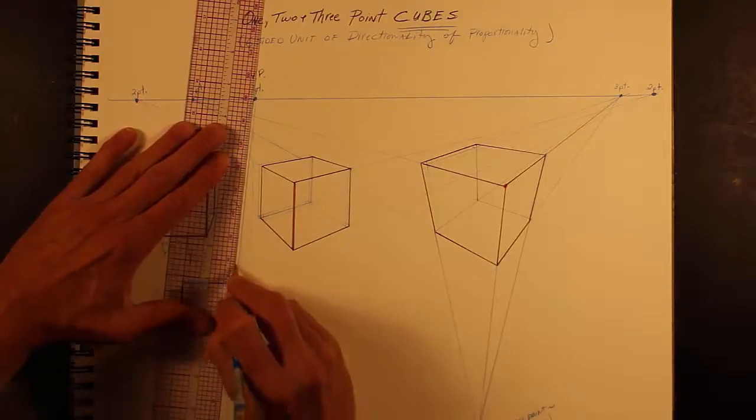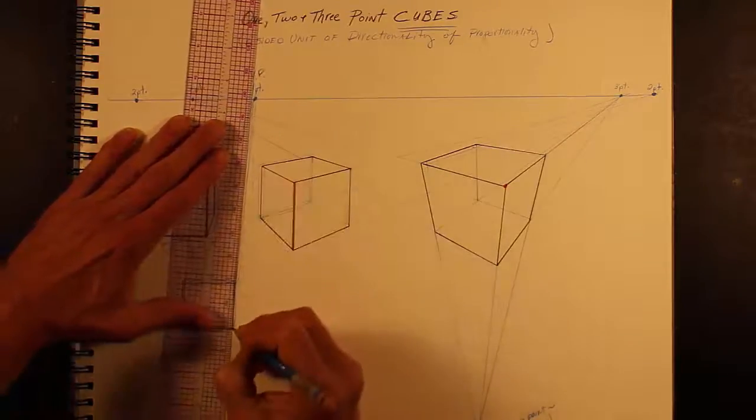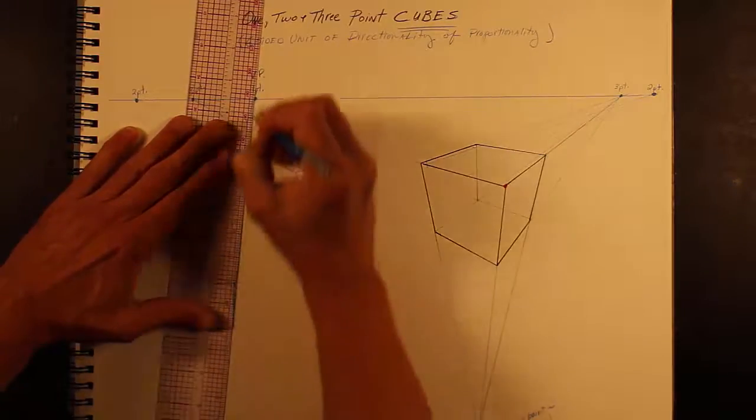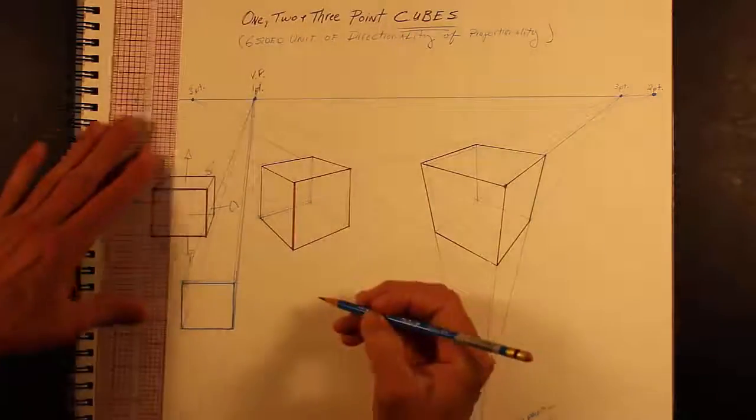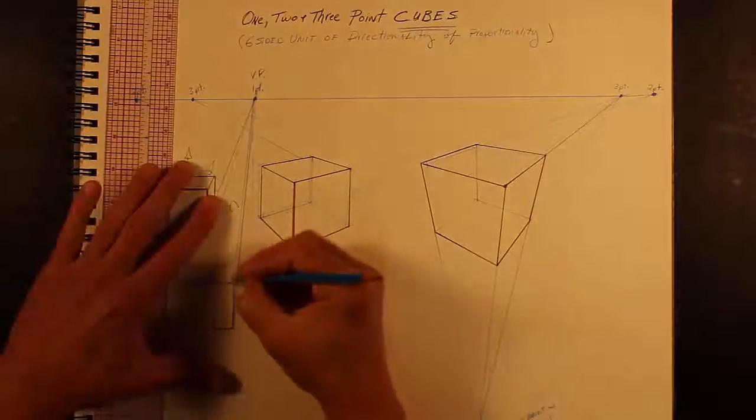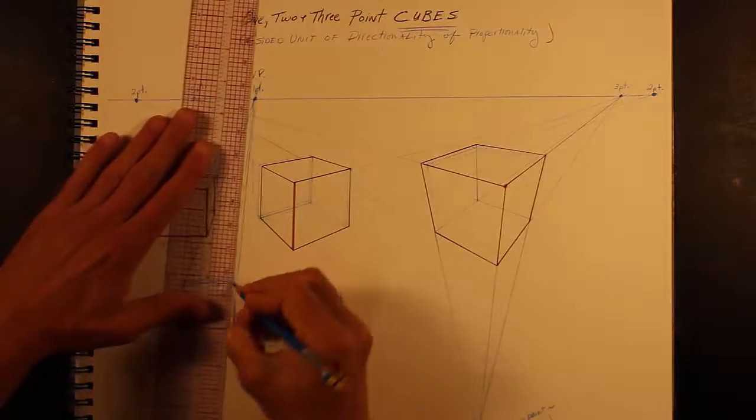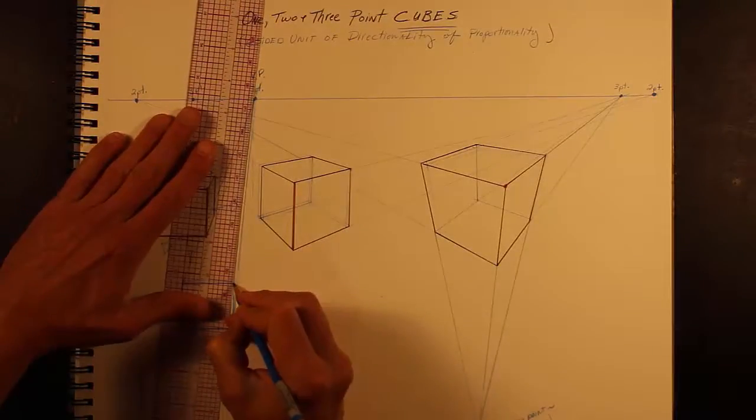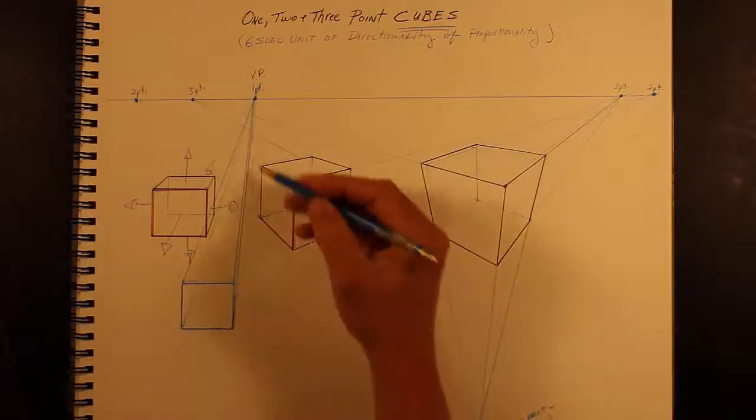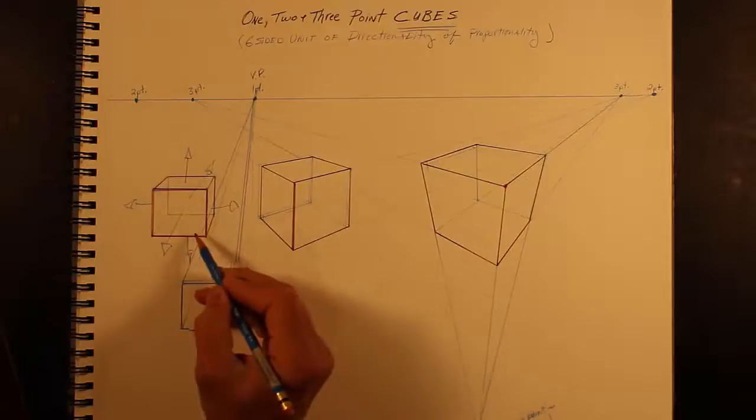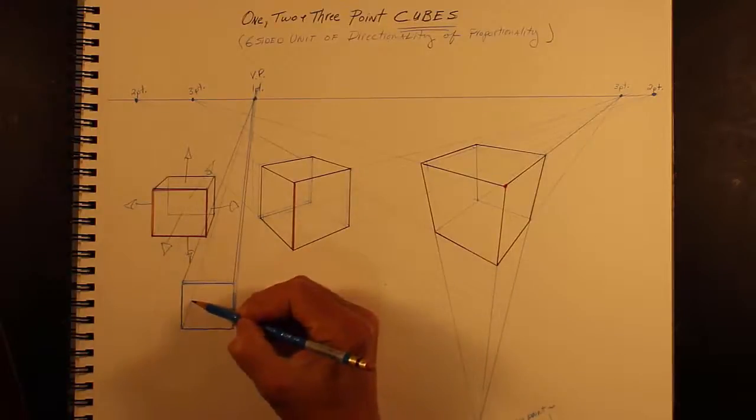I'll take this and go over there. And this is a little unclear, so... Okay, so here we have the first part. Now the next thing is to figure out the depth of proportion.